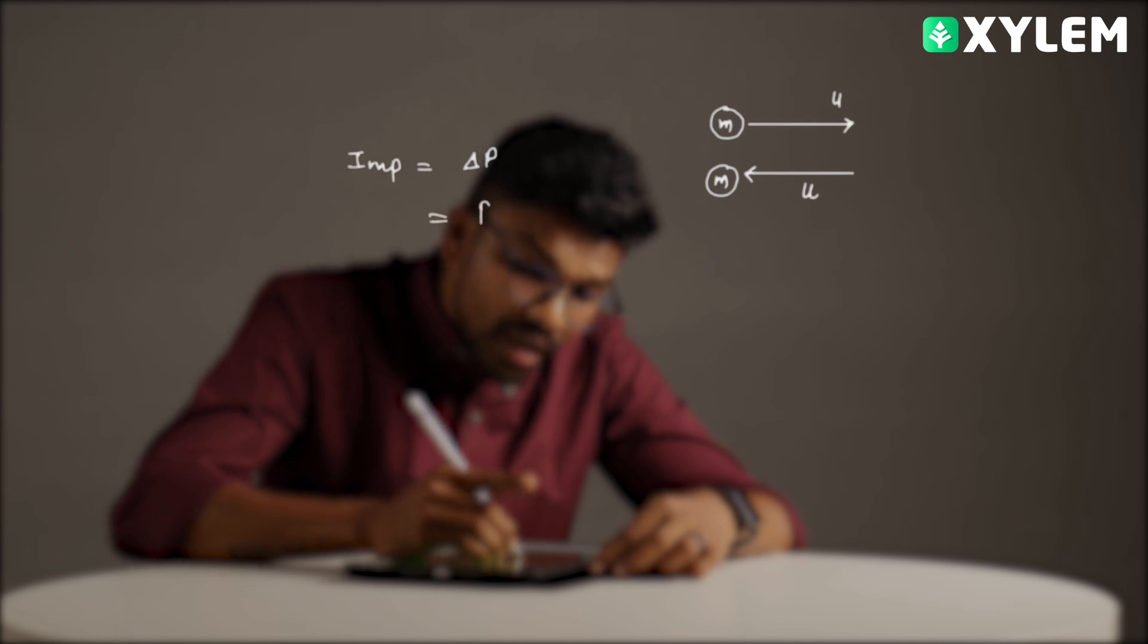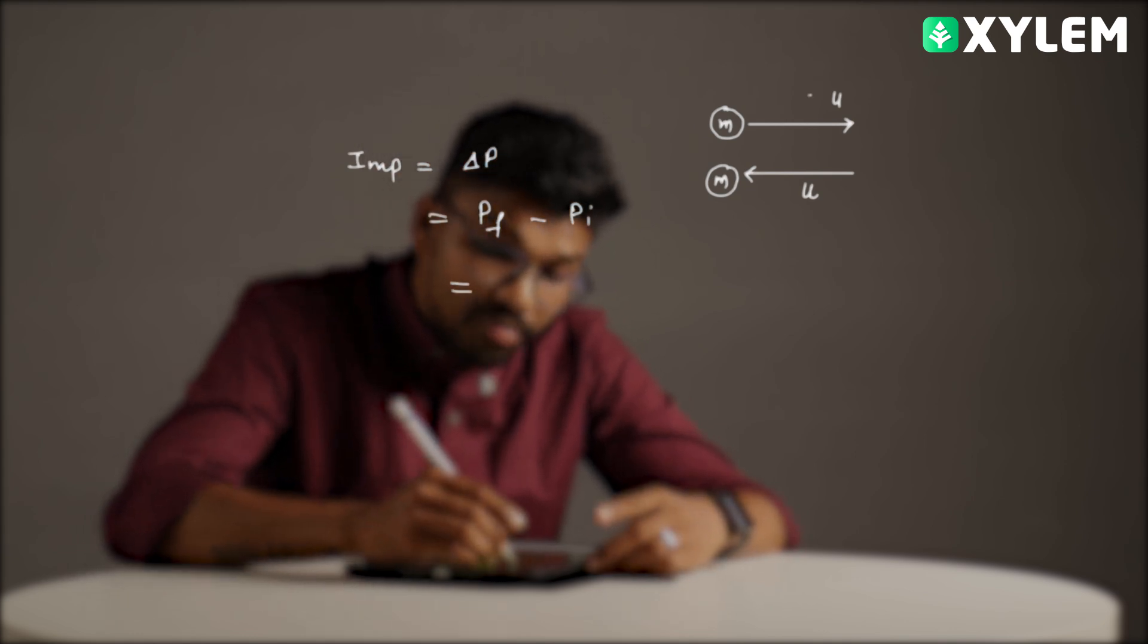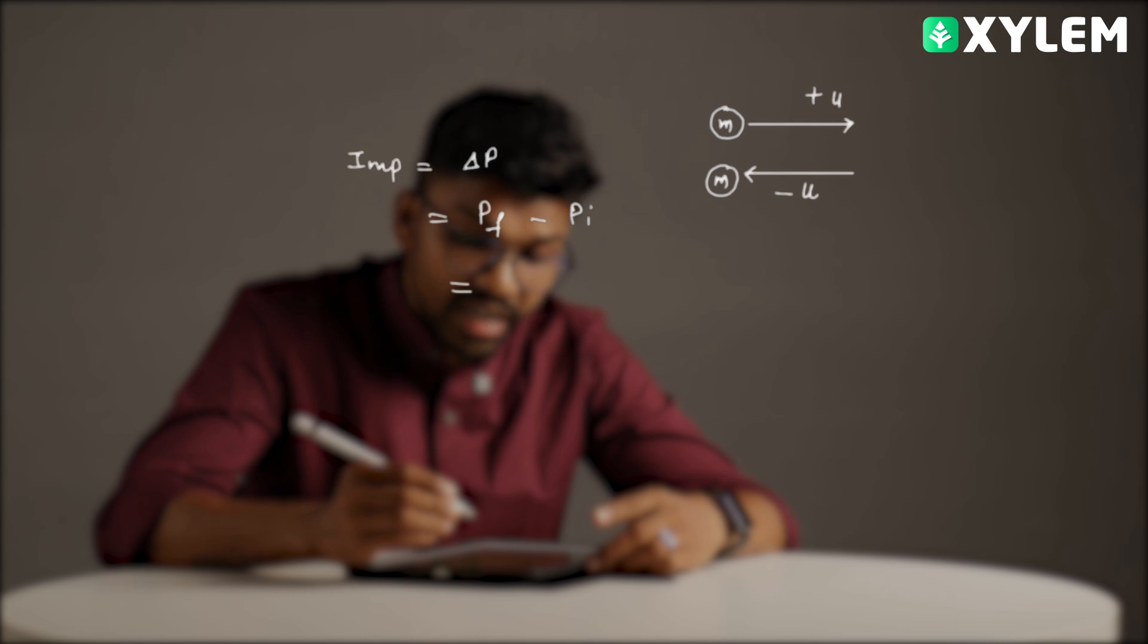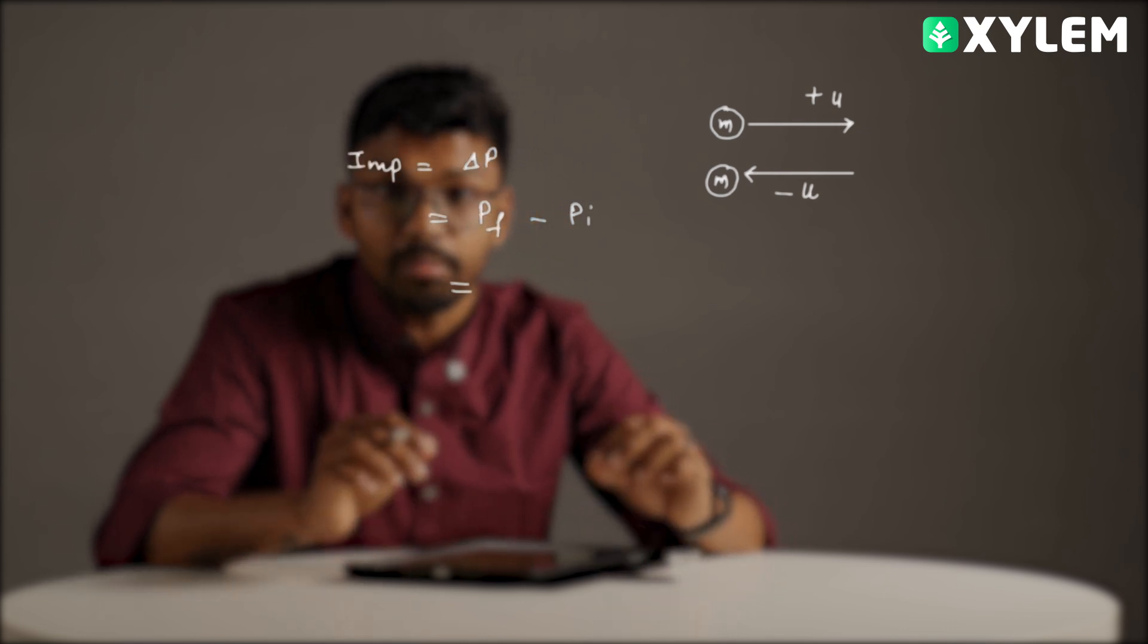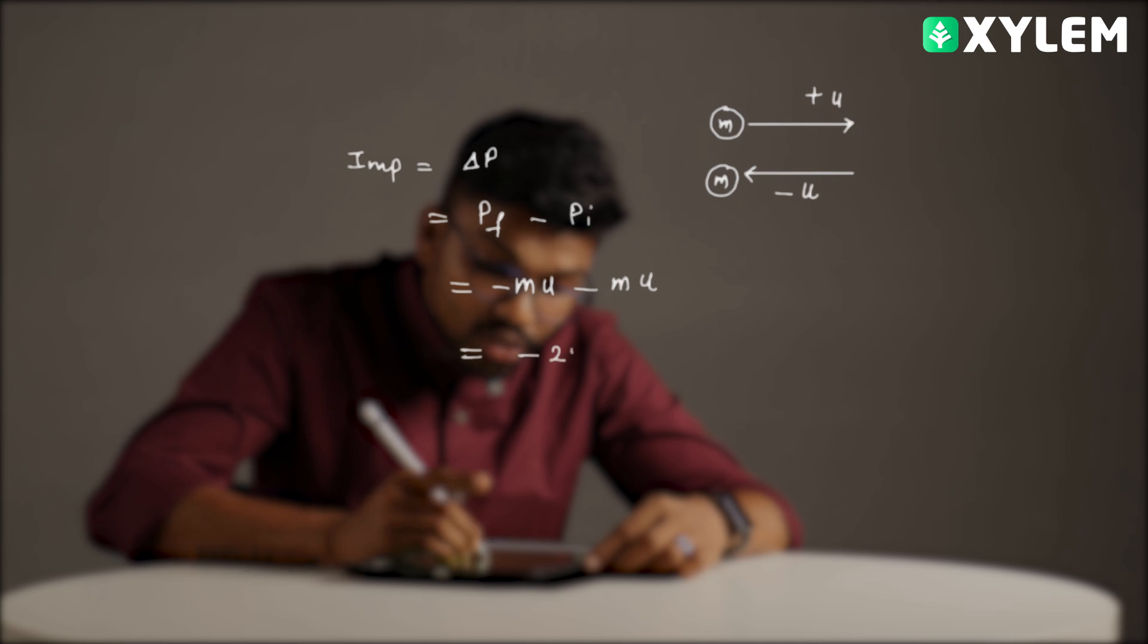What is the impulse imparted? We are looking at the impulse to calculate the change in momentum. Change in momentum is the final momentum minus the initial momentum. Very simple, logical, right? Right velocity is positive and left velocity is negative.